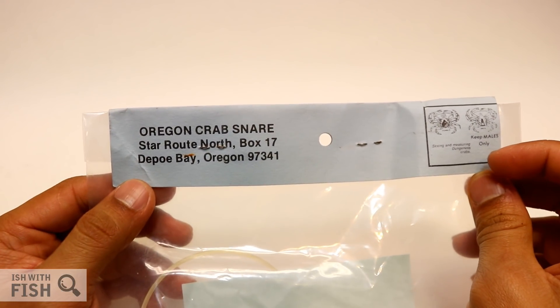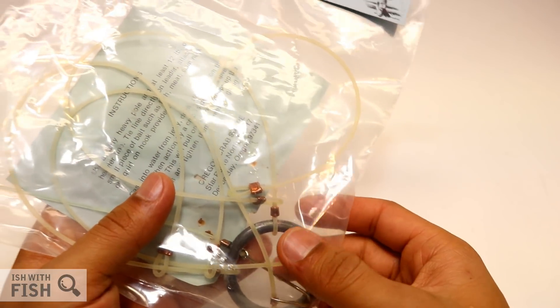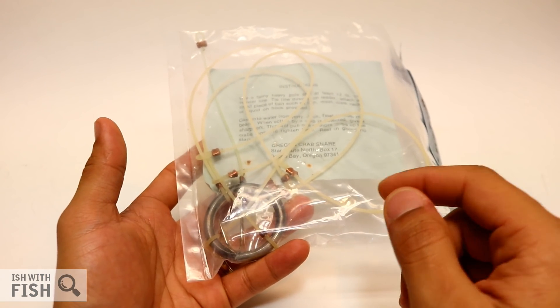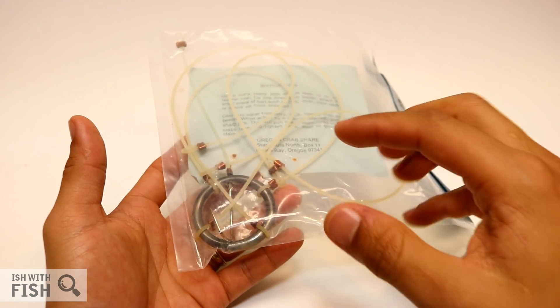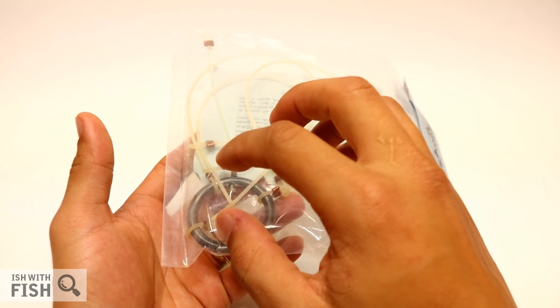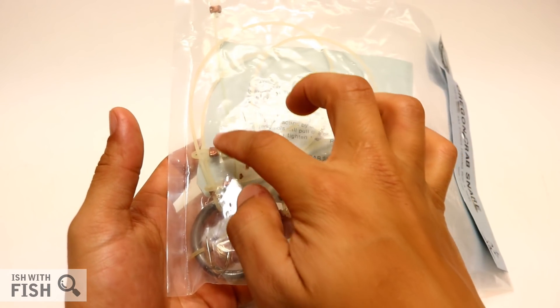Crab snares are pretty simple devices. They normally consist of a bait cage with six lassos attached. When the crab comes up and tries to take the bait, you can normally feel it pulling, or if you wait 10-15 minutes and give it a hard pull, there's a good chance that these lassos will hook onto the crab's legs or claws.